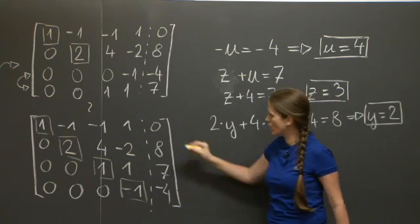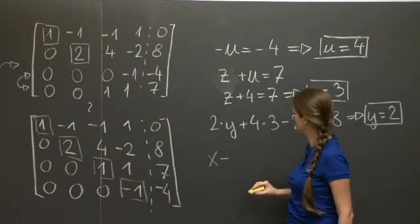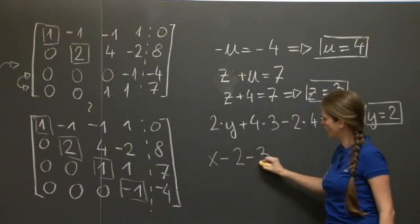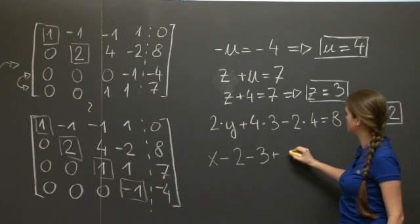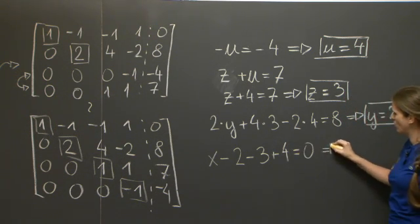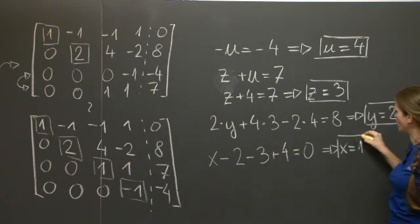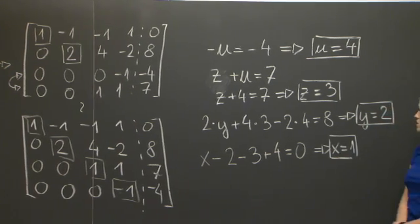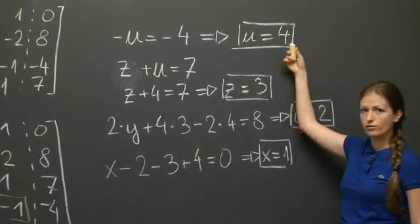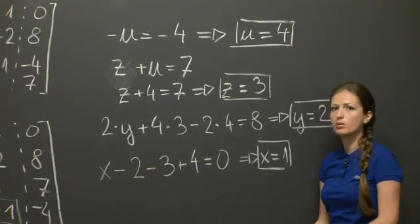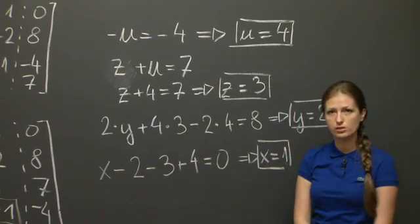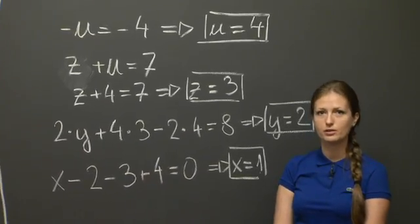And finally, the first equation reads x - y - z + u = 0, or x = 1. 1, 2, 3, and 4. This finishes the problem, but I would very strongly encourage you now to take this solution and plug it back into the original system and check if it's really a solution. And that's all I want to say today.